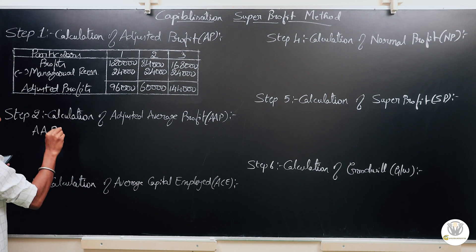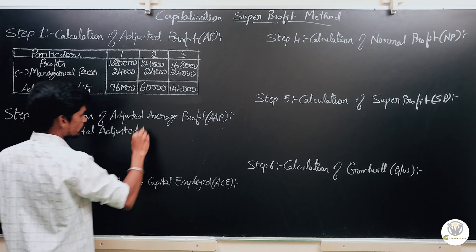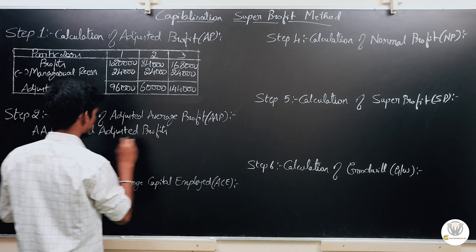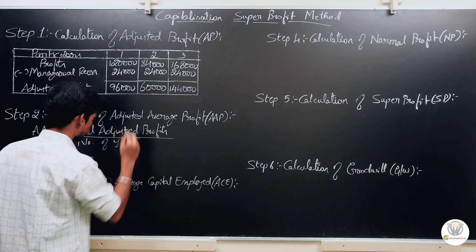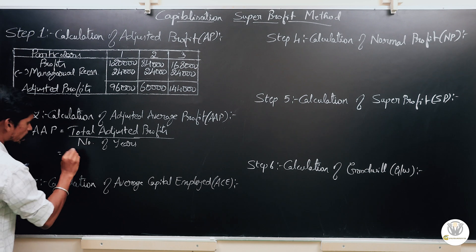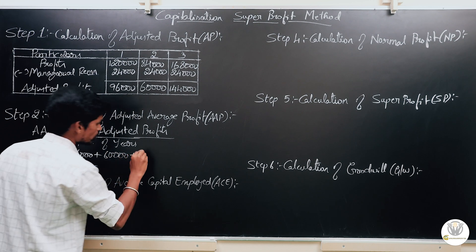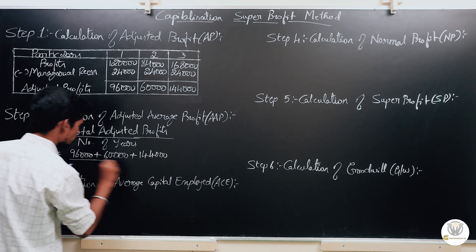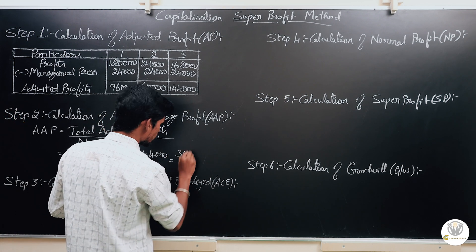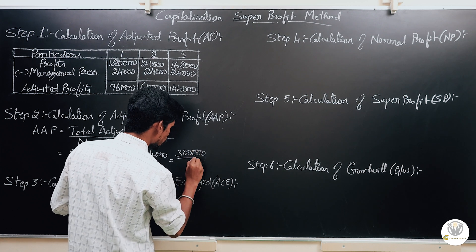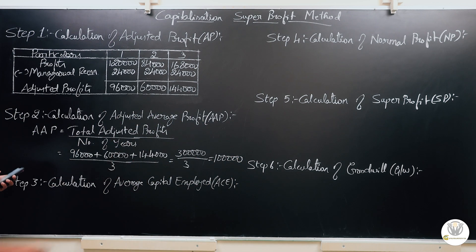Step 2: Calculation of Average Adjusted Profit (AAP). AAP is equal to total adjusted profits divided by number of years. Total adjusted profits: Rs. 96,000 plus Rs. 60,000 plus Rs. 1,44,000 equals Rs. 3,00,000. Divided by 3 years, AAP equals Rs. 1,00,000.